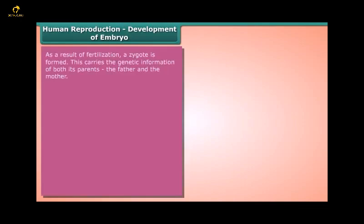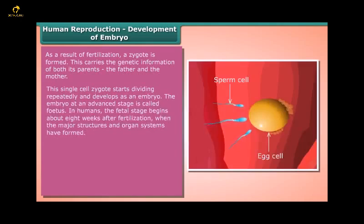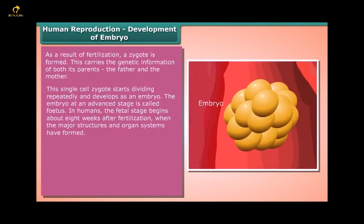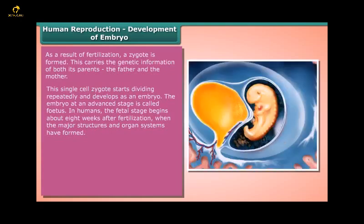Development of the embryo: As a result of fertilization, a zygote is formed that carries the genetic information of both parents. This single-cell zygote starts dividing repeatedly and develops into an embryo. The embryo at an advanced stage is called a fetus; in humans the fetal stage begins about eight weeks after fertilization, when the major structures and organ systems have formed.